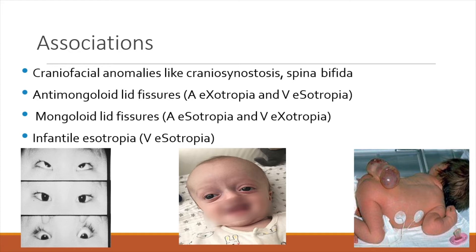For exam associations of pattern strabismus: craniofacial anomalies like craniosynostosis and spina bifida are mostly associated with A-pattern strabismus, through the orbital dystopia mechanism and the sagittalization of the oblique axis mechanism. Anti-mongoloid lid fissures lead to A-exo or V-eso. An A-pattern exotropia is associated with an anti-mongoloid fissure, while mongoloid lid fissures are associated with A-pattern exos. Infantile esotropia is very, very commonly associated with V-pattern exotropias.